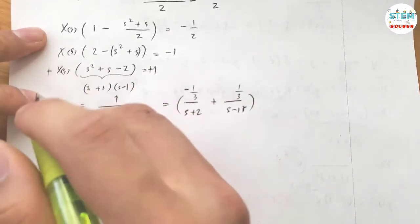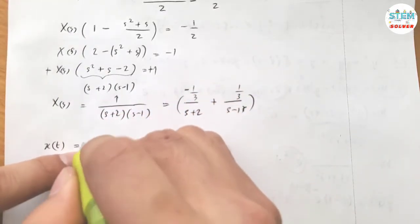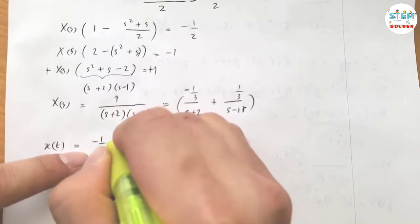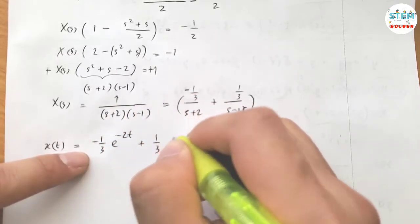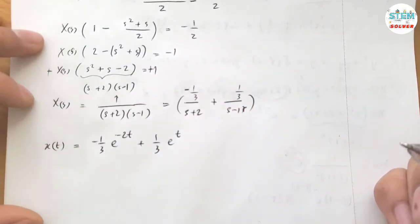Now, let's apply the L inverse of both sides. I have x of t equals negative 1 third e to the negative 2t plus 1 third e to the t. So this is your x of t.